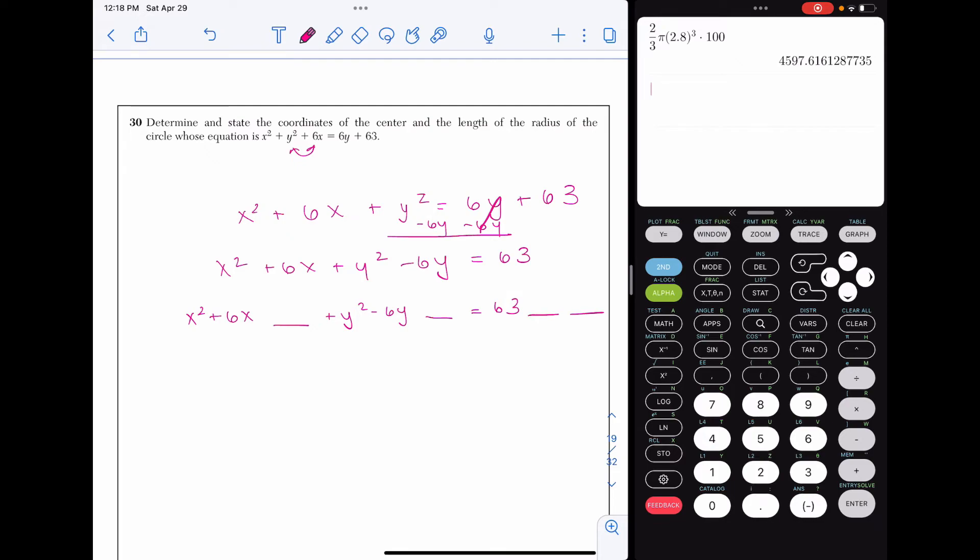To figure out what goes in that space, we're going to look at the coefficients of the x and the y terms, divide it by 2, and square it. So if I take 6, divide it by 2, I get 3, square it, and I get 9. We're going to put plus 9 in there. We want that plus to keep it a polynomial. Negative 6, you're going to get positive 9 as well. It doesn't matter that it's negative because once you square the negative 3, you'll get a positive back. And I'm going to add the 9s to the other side.